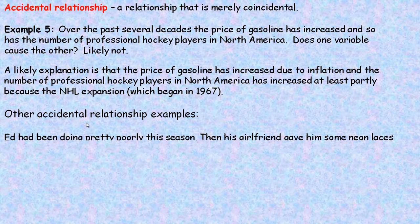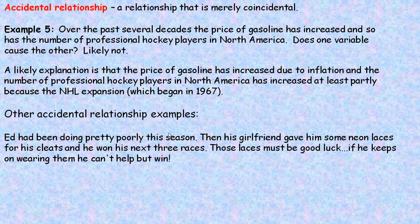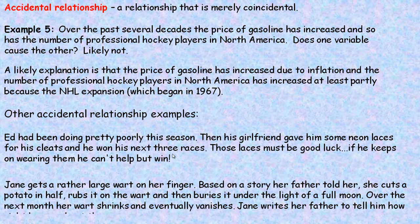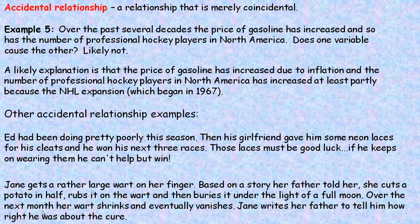Other accidental relationship examples: Ed has been doing poorly in his races, but after his girlfriend gave him neon laces for his cleats, he won his next three races. Those laces must be good luck — that's probably an accidental relationship. Another example: Jane gets a large wart on her finger, cuts a potato in half, rubs it on the wart, and buries it under the light of a full moon. Over the next month her wart shrinks and vanishes. That's also probably an accidental relationship, as her wart likely would have gone away on its own anyway.